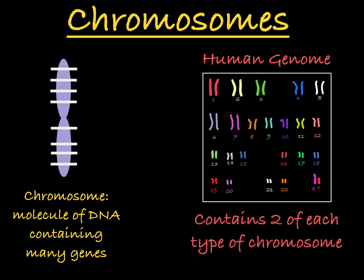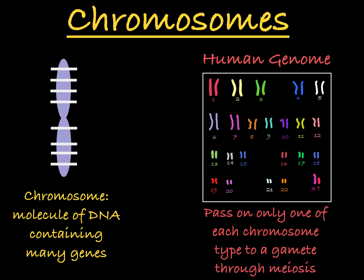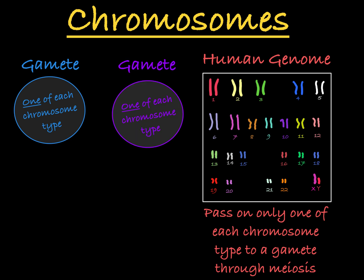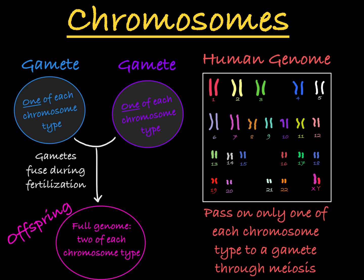For the most part, a genome contains two of each type of chromosome. In meiosis, when gametes are being produced, an organism will pass on only one of each type of chromosome to the egg or sperm, meaning only half of the genome moves into the gamete. This gamete will go on to fuse with the gamete of another organism to form a new organism containing a full genome.